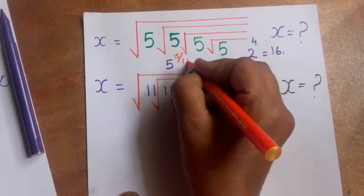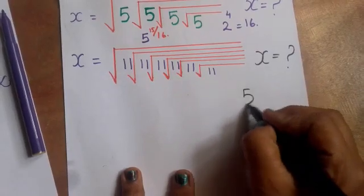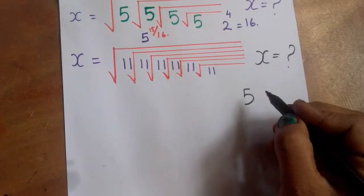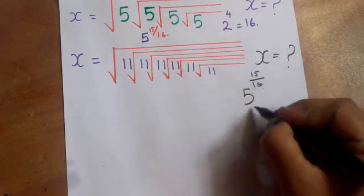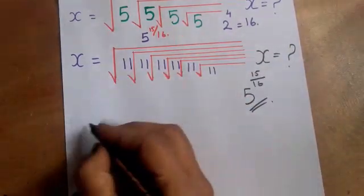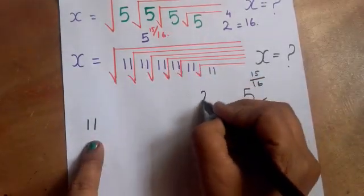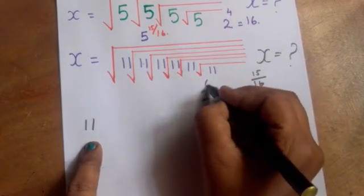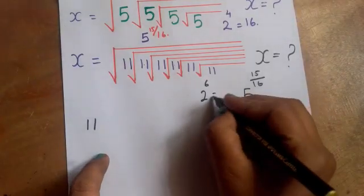15 by 16, this is the answer. I will show you 5, I will show you 3 number. 15 by 16 is the answer. Now I will show you 2. How many times? 1, 2, 3, 4, 5, 6 times. 2 into 2 into 2, 6 times — that is 64.